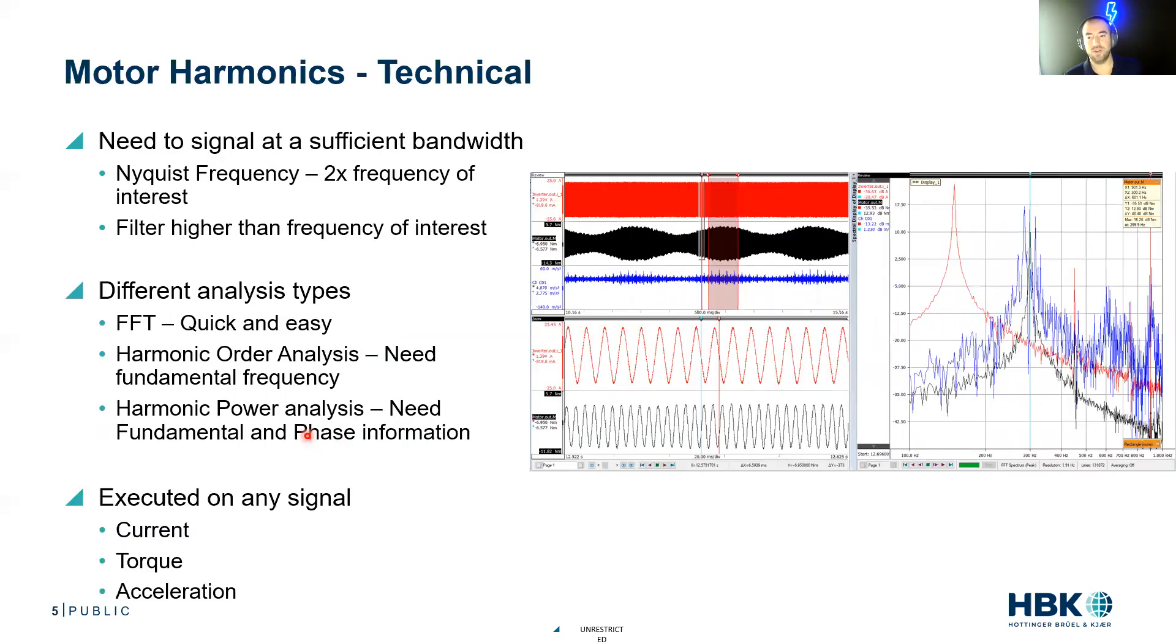A little technical dive into the harmonics. When we're measuring harmonic content, we need to signal at a sufficient bandwidth. We need to measure the signal at a high enough frequency so that we can understand the content we're interested in. Now the Nyquist frequency, everybody learns this in school, it's two times the frequency of interest. We really want to sample probably 20 times higher than our frequency of interest.